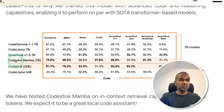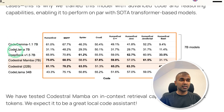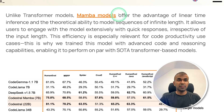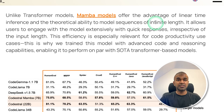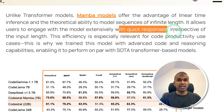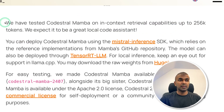The CodeStral Mamba 7 billion parameter model is on par with the CodeStral 22 billion parameter model, and it beats CodeJama, CodeLlama, and DeepSeq. Mamba offers the advantage of linear time inference and the theoretical ability to model sequences of infinite length, providing quick responses irrespective of input length.